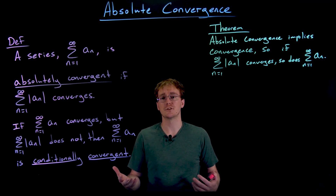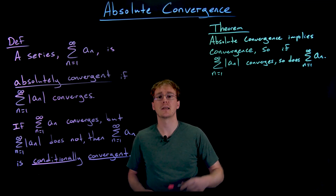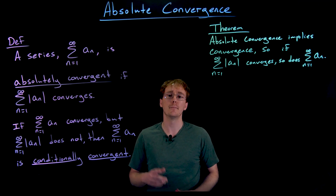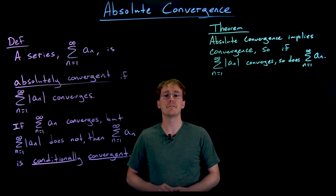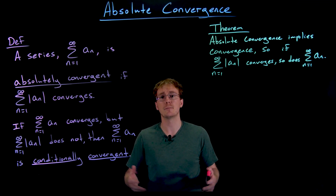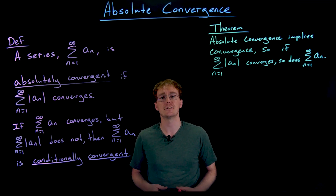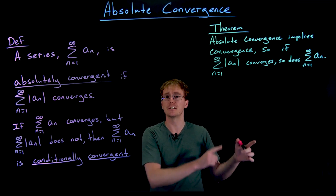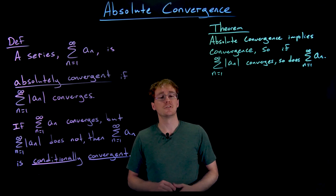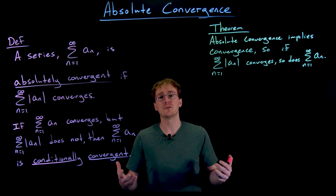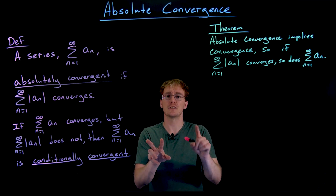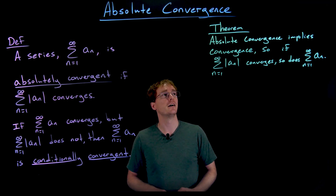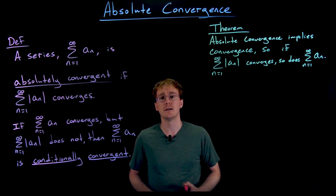You might wonder why we don't always just use the alternating series test instead of looking at absolute convergence. There will be other applications of absolute convergence we'll see later on, but another point is that not every series will be purely alternating. We may have irregular alternation, in which case the alternating series test would not apply — it only applies when every term alternates sign from one term to the next. If we have an irregularly alternating series where maybe two positive terms are followed by a negative term, then two positives, then a negative, that's where absolute convergence and this theorem are better to use.